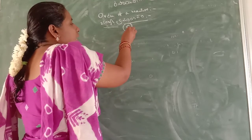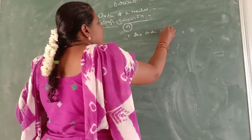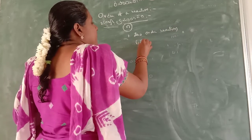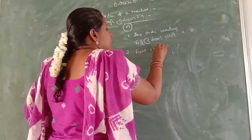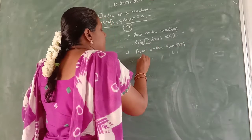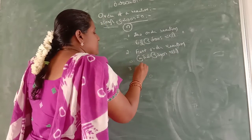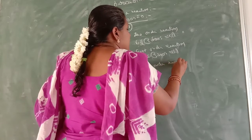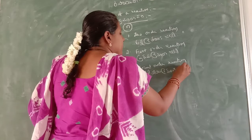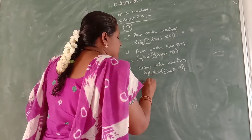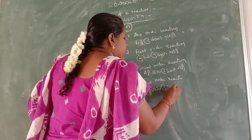Based on the n-value, chemical reactions are classified into: zero order reaction (Sunna Pramantacarya), first order reaction (Pratrama Pramantacarya), second order reaction (Dvitiya Pramantacarya), and third order reaction.